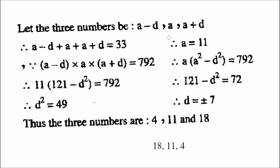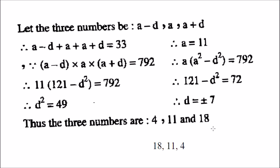When D is positive 7, A is 11, A minus D is 4 and A plus D is 18. So the three numbers are 4, 11, and 18. And when D is negative 7, the three numbers are 18, 11, and 4.